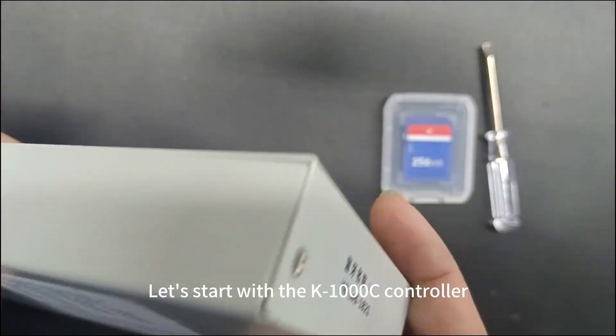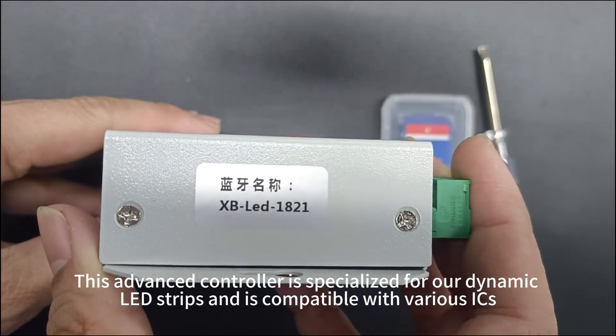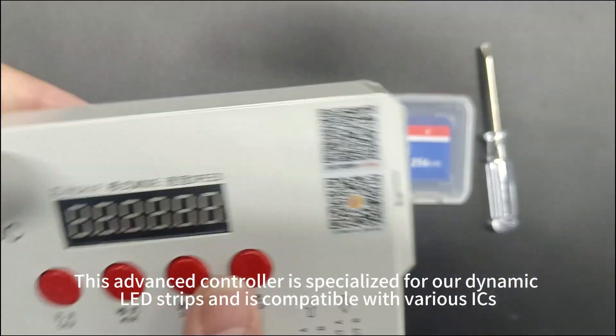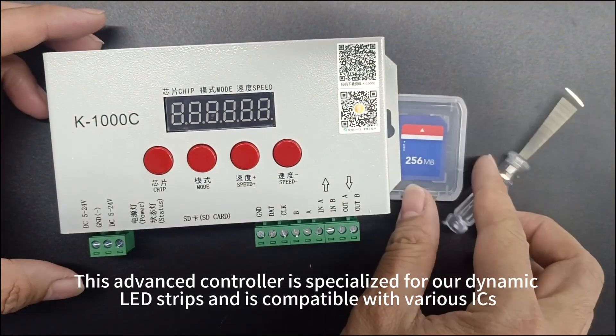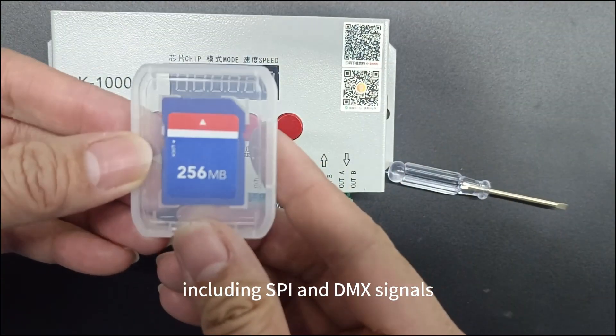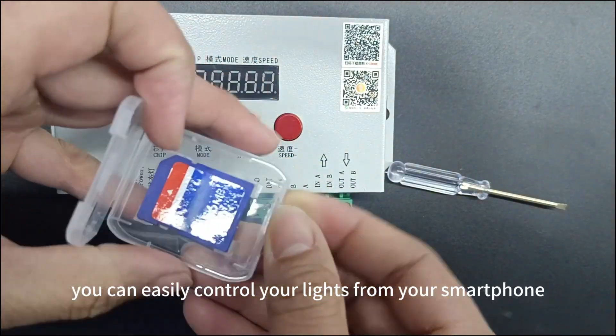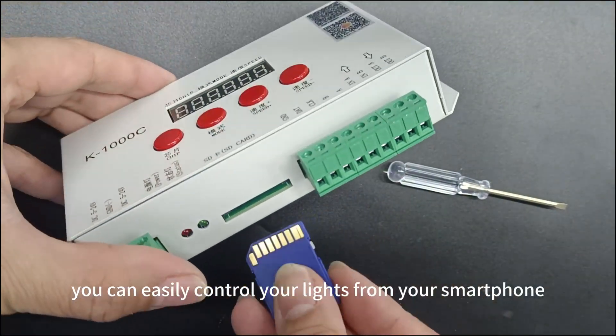Let's start with the K100C controller. This advanced controller is specialized for all dynamic LED strips and is compatible with various ICs, including speed and DMX signals. With its Bluetooth connectivity, you can easily control your lights from your smartphone.